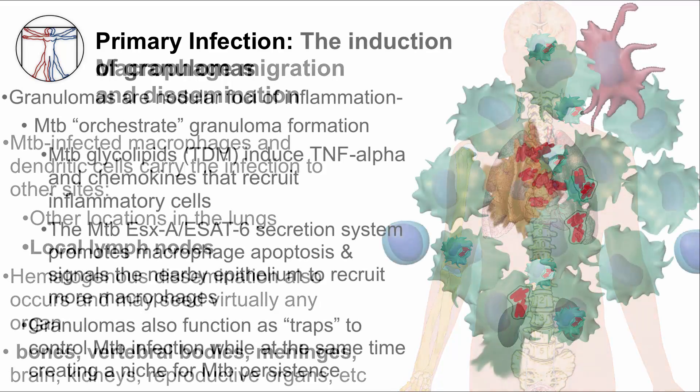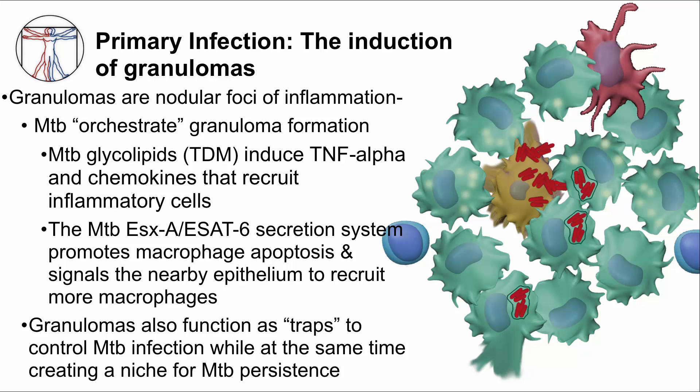The next part of the life cycle is persist. As MTB replicates within macrophages, MTB begins to modulate the immune system to induce the initial formation of a granuloma. For MTB, granulomas are important for persistence — it's an ideal niche for long-term survival. Granulomas are nodular foci of inflammation formed by a collection of many different types of immune cells. MTB orchestrates granuloma formation using virulence factors. For example, TDM is a type of glycolipid in the cell envelope that induces TNF-alpha and chemokines to recruit inflammatory cells to the site. The ESXA ESAT-6 excretion system of MTB promotes macrophage apoptosis and signals the nearby epithelium to recruit more macrophages. Granulomas are not only a niche for MTB persistence, but also function as traps as they organize the collection of immune cells.